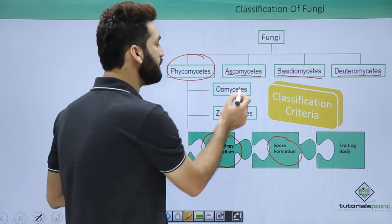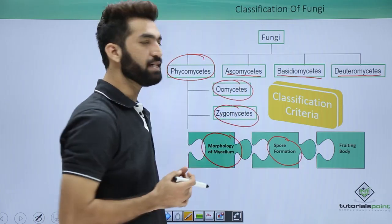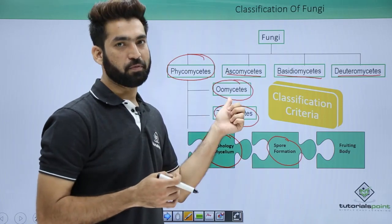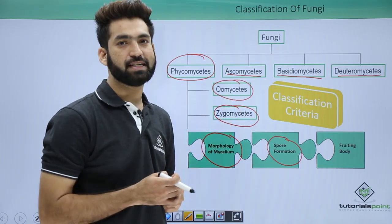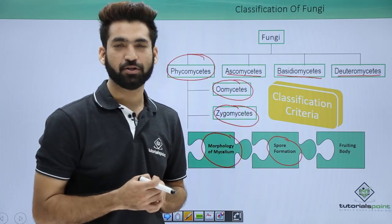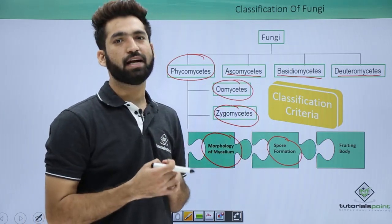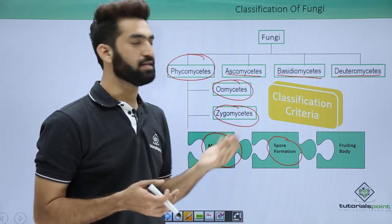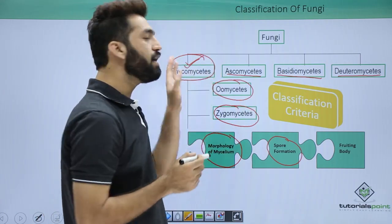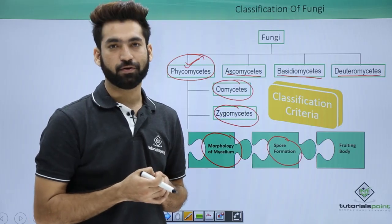When you look further for the phycomycetes member, there is oomycetes and you will have zygomycetes. What happens in oomycetes is oospores form. What happens in zygomycetes is zygospores. You will have ascospores in ascomycetes and basidiospores in basidiomycetes. So based upon the name of the spores, we are trying to cover the classes. When you look forward for phycomycetes, they are aseptate fungus. Aseptate means multinucleated.